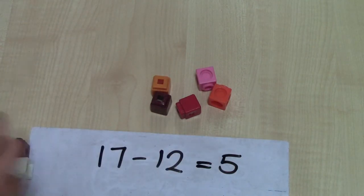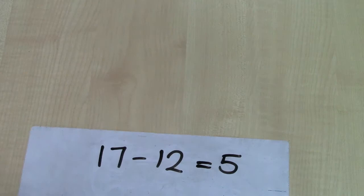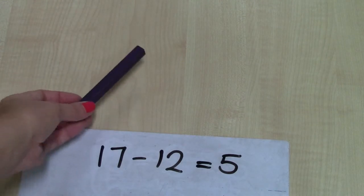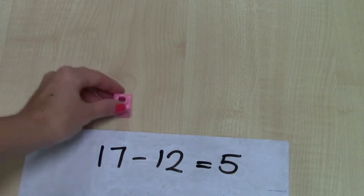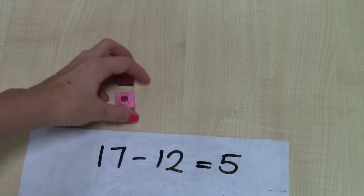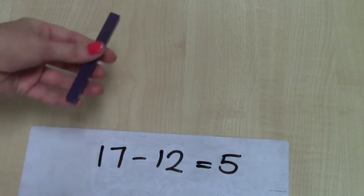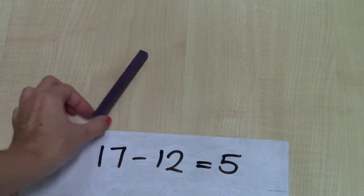Moving on from there, you can start to introduce Deans. So it's really important that children understand that rather than a one to one correlation that we've got with our cubes, this one represents ten units.